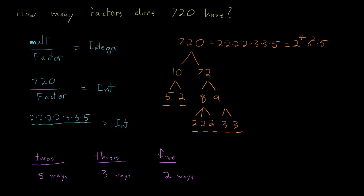So how do I combine this information? For each of the five ways to deal with the 2s, that can be combined with any of the three ways to deal with the 3s, and each of those combinations can be combined with any of the two ways to deal with the 5s. Since it's 'for each of these we have three, and for each of those we have two,' we need to multiply. So we get five times three times two.